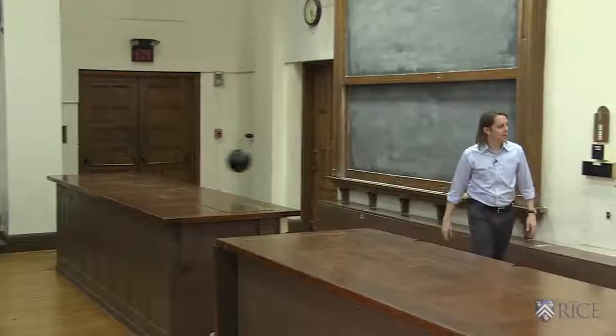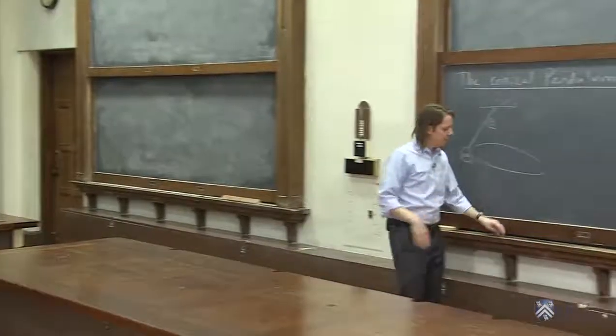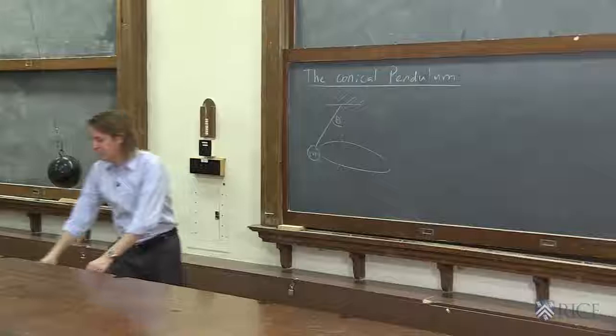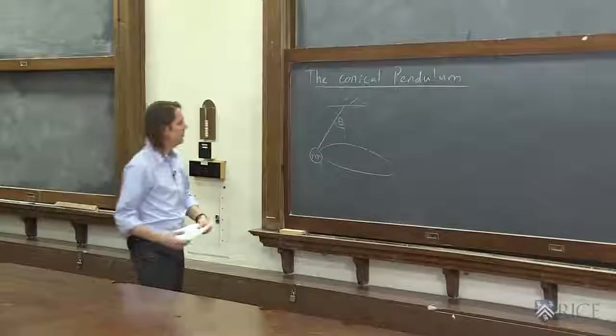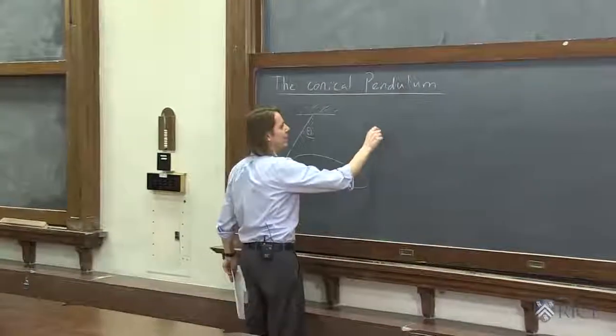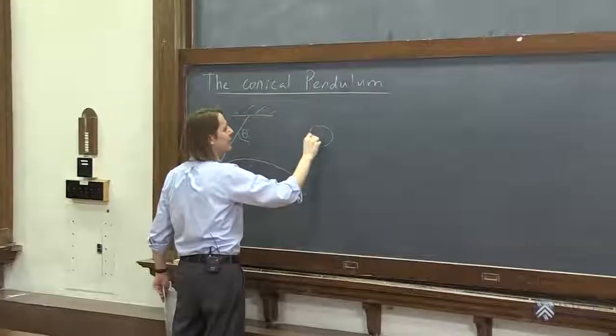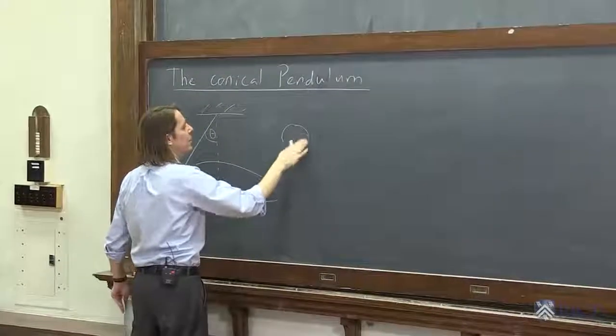There we go. That's a nice circular conical pendulum. So what do we always do in this situation? We apply Newton's second law of motion. So we draw a free body diagram here. Here's our mass.